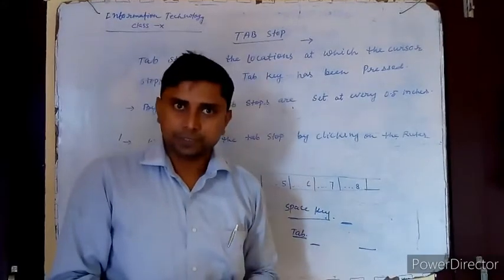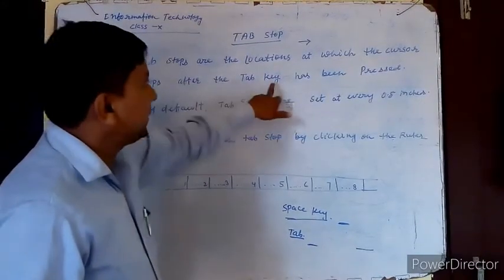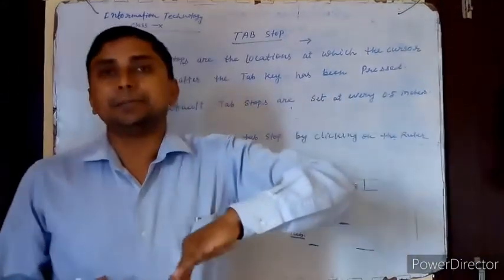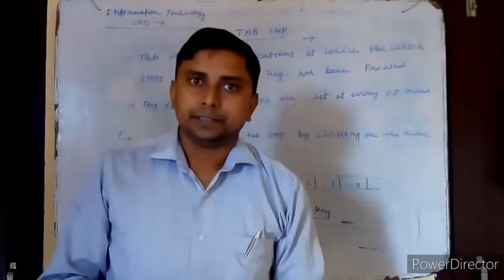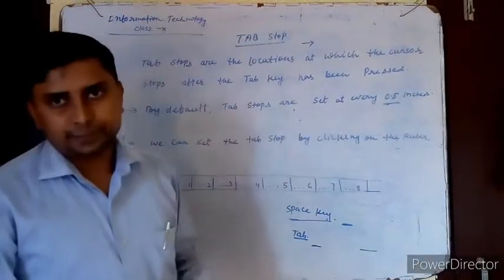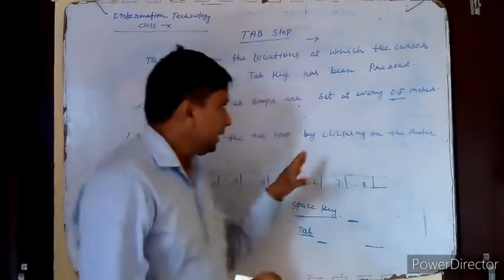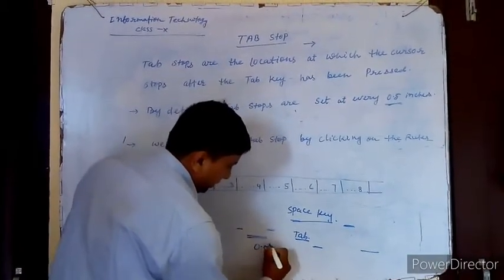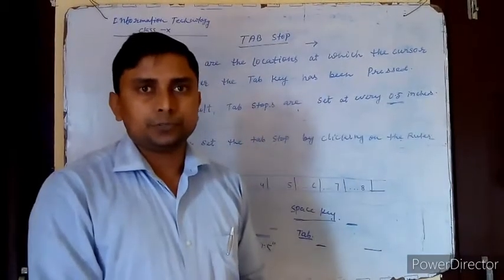Tab stops are the locations at which the cursor stops after the tab key has been pressed. Whenever we press the tab key, the cursor will reach the place defined by the tab stops. By default, the tab stop is set to 0.5 inch automatically. If you don't change any tab stop, then whenever you press the tab key in MS Word, the cursor will move 0.5 inch.